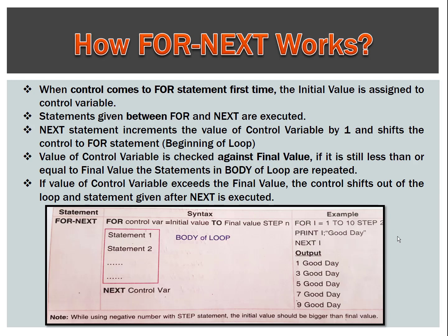How For-Next works: When control comes to the For statement for the first time, the initial value is assigned to the control variable. Statements given between For and Next are executed. The Next statement increments the value of the control variable by 1 and shifts control back to the For statement at the beginning of the loop. The value of the control variable is checked against the final value. If it is still less than or equal to the final value, the statements in the body of the loop are repeated. If the value of the control variable exceeds the final value, control shifts out of the loop and statements given after Next are executed.